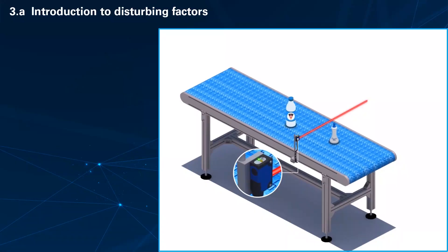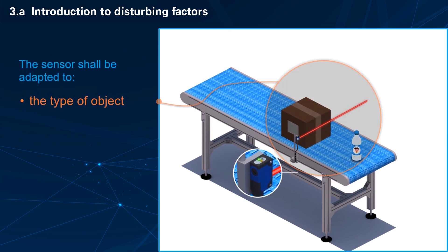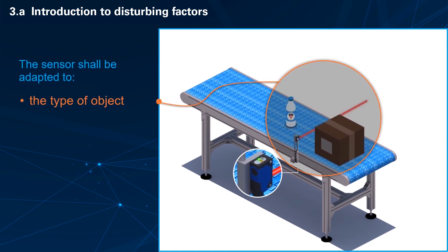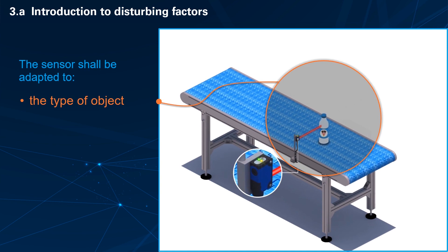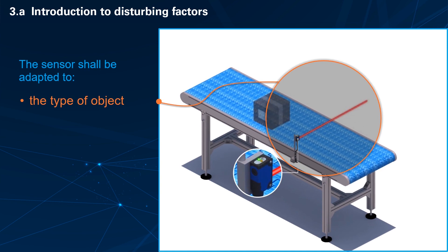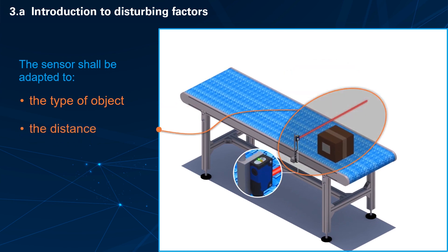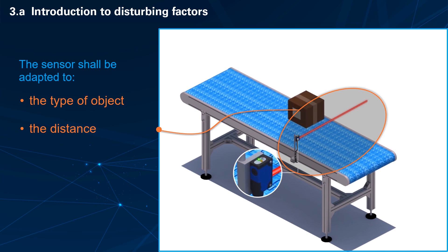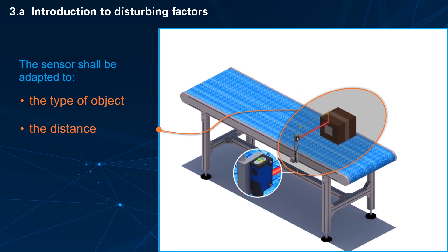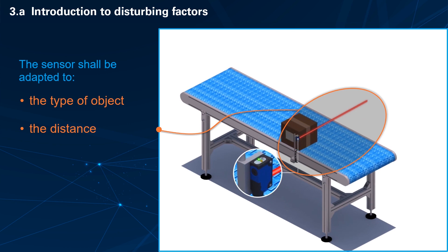For a given application, a photoelectric sensor shall be adapted to the type of object to be detected. Whatever the size, the color, the shape of the object carried by this conveyor, it shall be detected. The photoelectric sensor shall also be adapted to the distance between it and the object to be detected. Whatever the distance between the sensor and the object carried, it shall be detected.